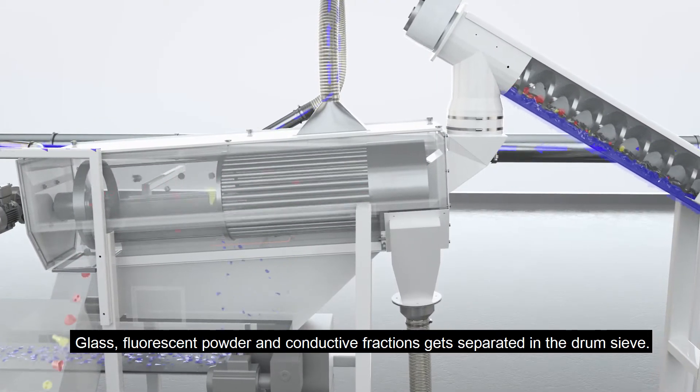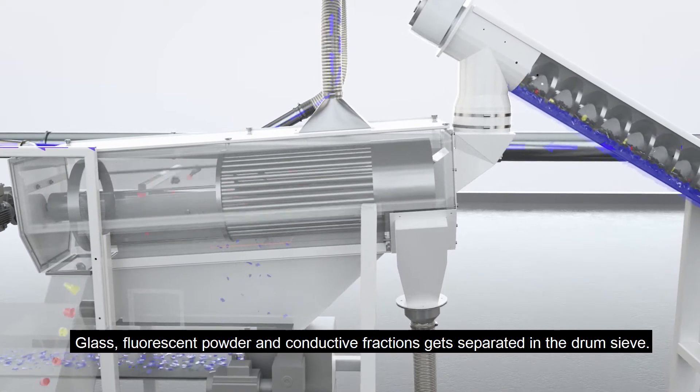Glass, fluorescent powder and conductive fractions get separated in the drum sieve.